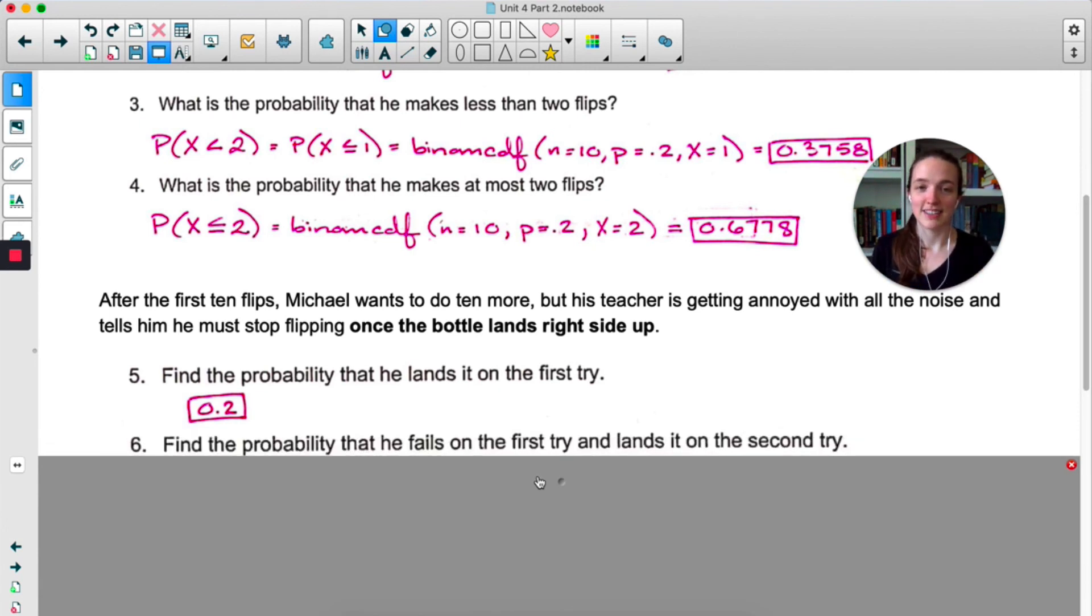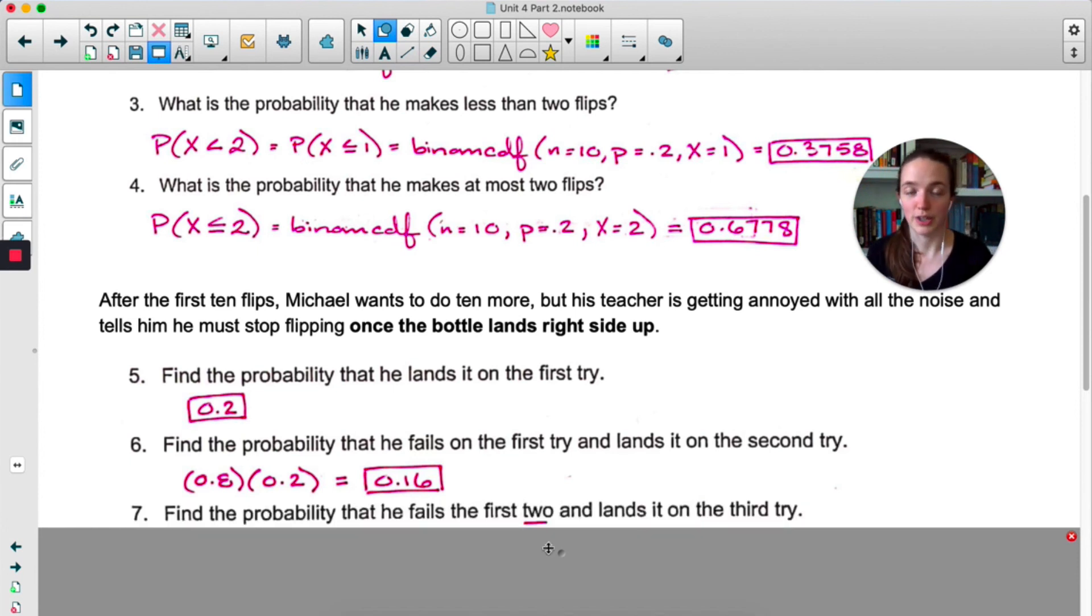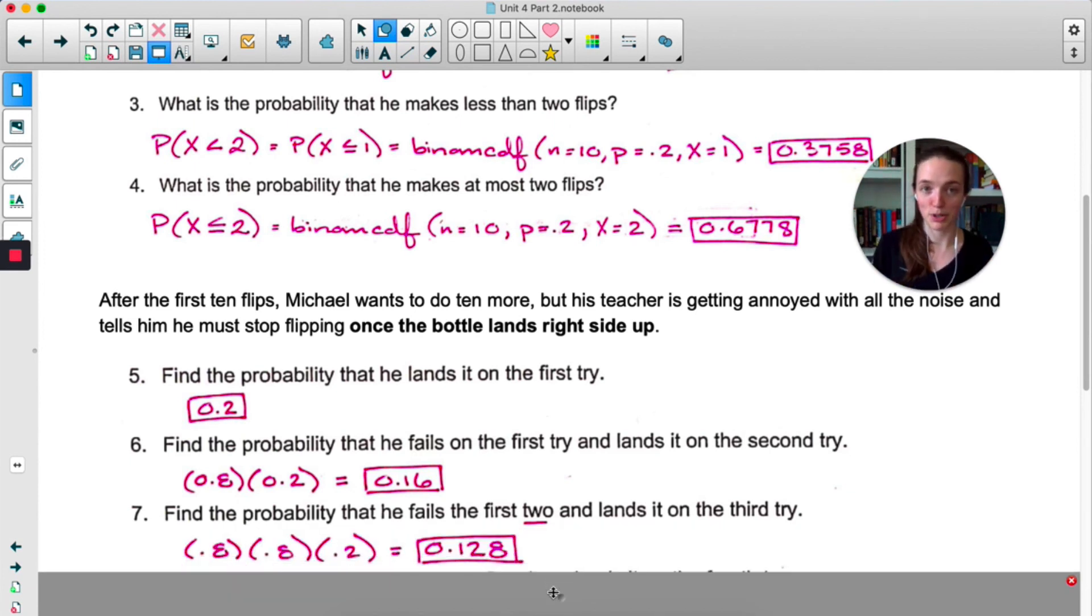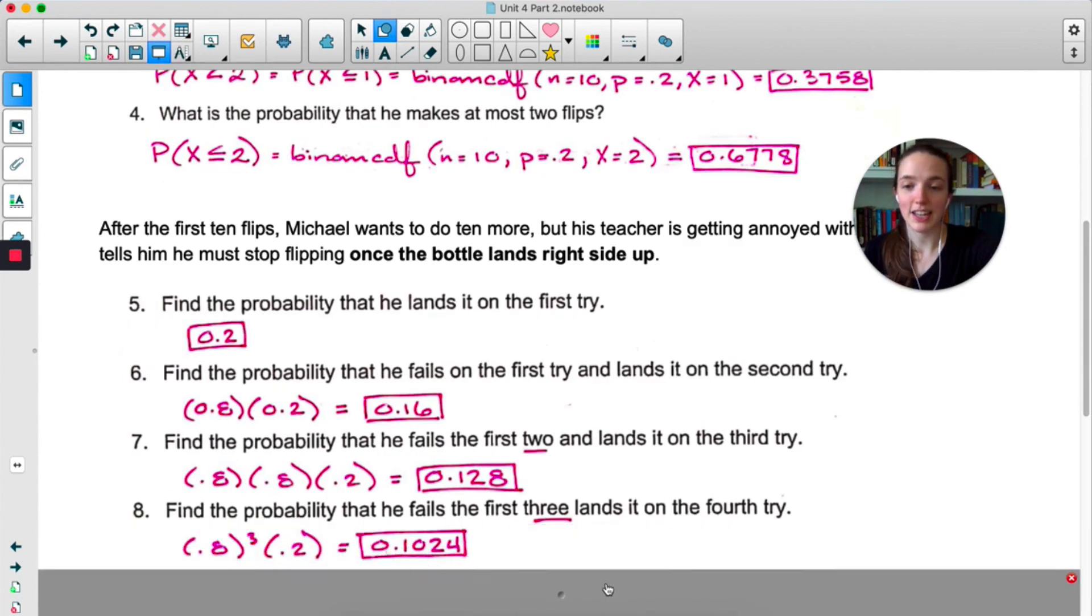Probability that he fails on the first try and lands it on the second try. So this is an and scenario. We want fail and success. Fail on the first try would be 0.8. Success on the second, 0.2. We multiply them together. There's a 16% chance that he has to stop on the second try. Find the probability he fails at the first 2 and lands on the third. You can probably see a pattern here. 0.8 times 0.8 times 0.2. We want fail and fail and success. So the probabilities are getting smaller now. Probability that he fails in the first 3. I'm going to shorten this up and just say 0.8 raised to the third times 0.2. And this pattern can continue for as long as we want.